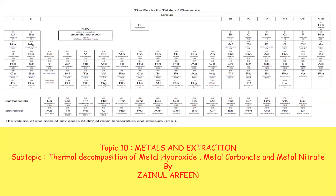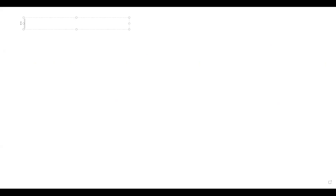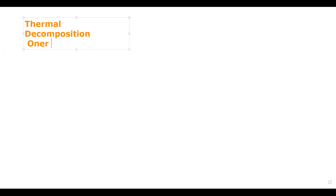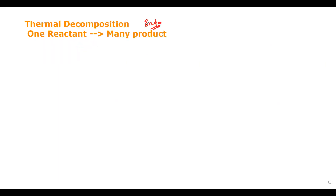The third part is about thermal decomposition. The concept of thermal decomposition is: by the action of heat, if you can carry out a chemical change, we call this a thermal decomposition. To identify whether a reaction is a thermal decomposition, there is always one reactant and more products. Thermal decomposition is always endothermic because by the help of heat you carry out the change.